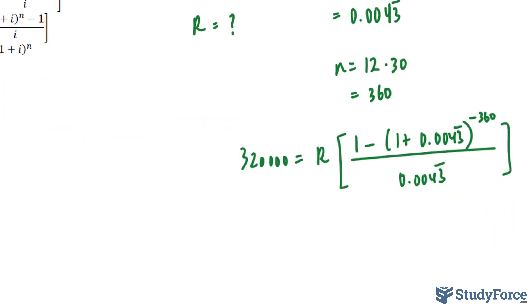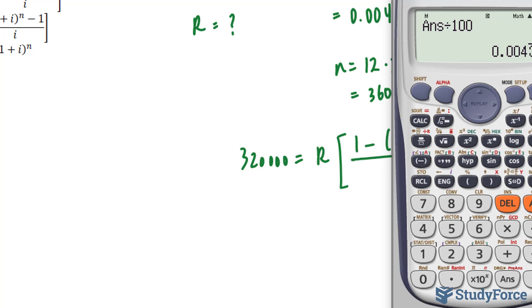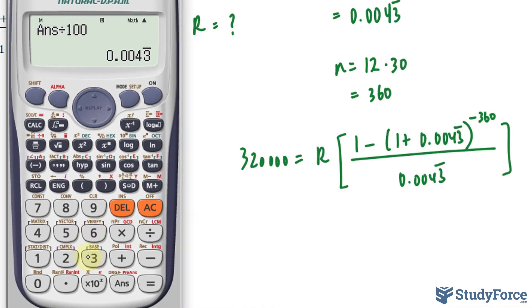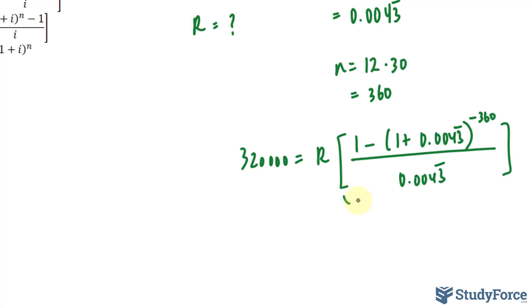And we will need to apply a little bit of algebra to solve for R. So what you can do is compute all of what you see on the right and take whatever you get and divide 320,000 by that number. So I'll show you what I mean. I'll take 320,000 and divide it by that entire expression.